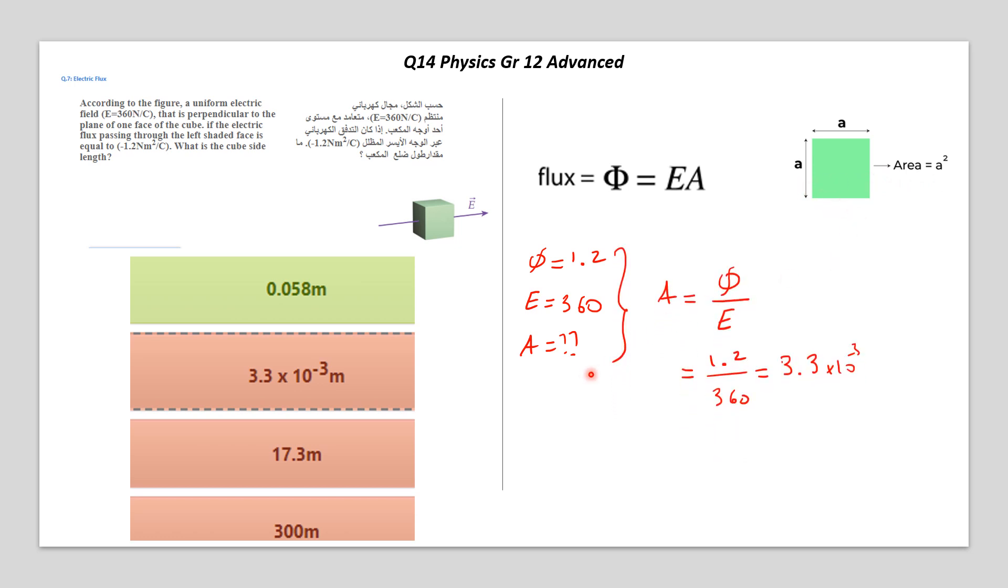So here we go. Area should be equal to the flux over E, which is 1.2 divided by 360. It's equal to 3.3 by 10 to the power of minus 3. So that's the area of the square.